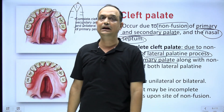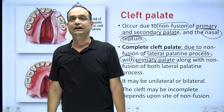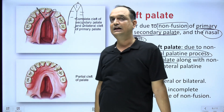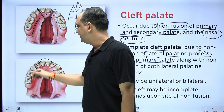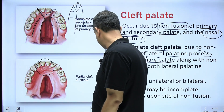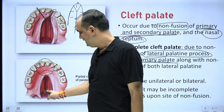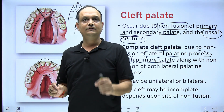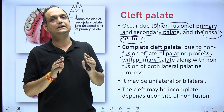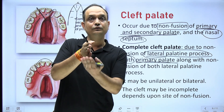Complete cleft palate can be unilateral or bilateral — if the defect extends on both sides, it is bilateral complete cleft. The cleft may also be incomplete depending on the site of non-fusion. In incomplete cleft, the primary palate fuses completely with both right and left shelves, but the shelves fail to fuse in the posterior part, resulting in a cleft in the posterior hard palate and soft palate.